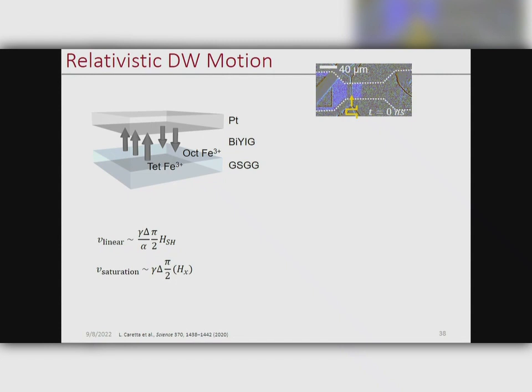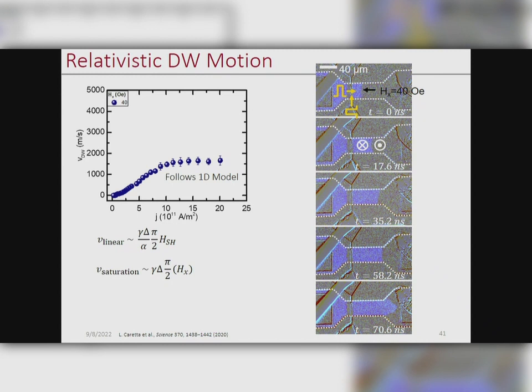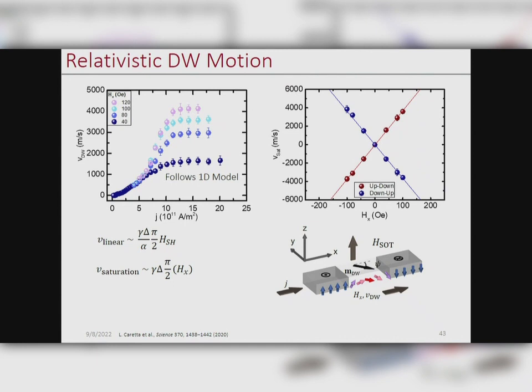We designed racetrack-like geometries where we can nucleate domain walls, apply fields to stabilize Néel domain walls, and then drive them into motion. We see quite fast velocities: plots of domain wall velocity versus current density follow the 1D model with a linear regime and a plateau. Now this plateau is proportional to the stiffness of the domain wall set by the in-plane field we apply — the larger the in-plane field, the higher this plateau — and it's actually linear in nature.